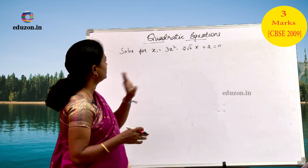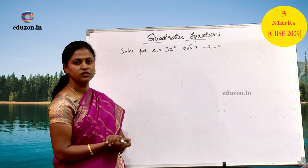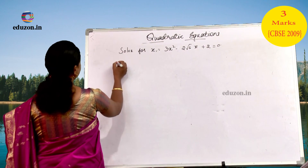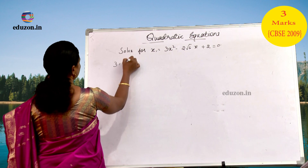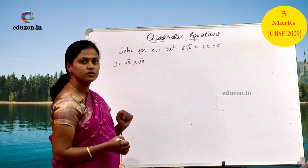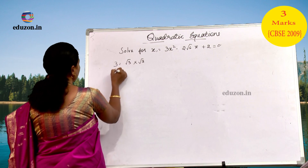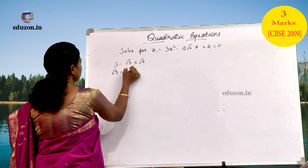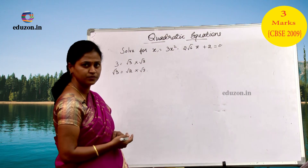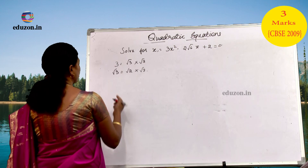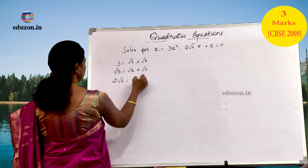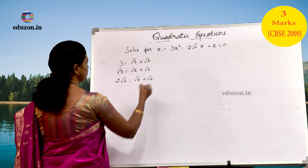When you look at such quadratic equations, the first thing that you should remember is we can write 3 as root 3 into root 3. Also, 2 root 6 can be written as root 6 plus root 6.